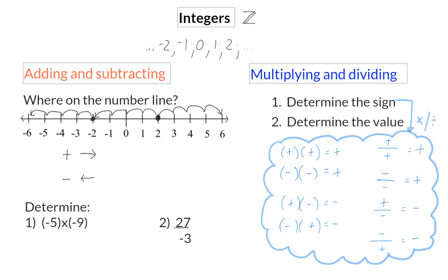Let's once again have a look at two basic examples. In the first question, we are multiplying two numbers, so we start determining the sign, and here we have a minus times a minus, which will become a plus, which we don't have to write. Then, to determine the value, we say 5 times 9, and that is 45.